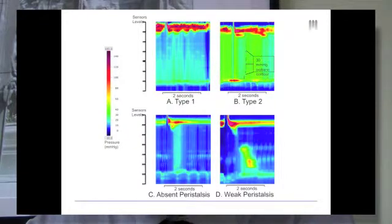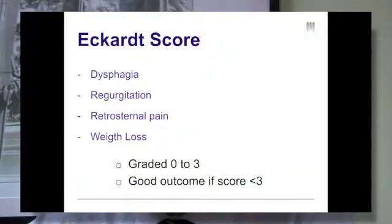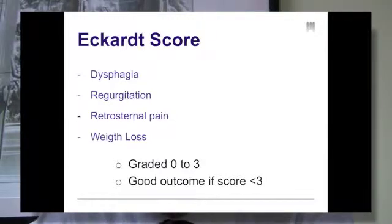Hence, patients were categorized as having a persistent Achalasia pattern if they met the criteria for type 1 or type 2 Achalasia, or as a resolved Achalasia pattern along with the description of the current manometric profile using the Chicago classification definitions. The symptom score used for the study was the Achalasia score, which is calculated by grading severity of dysphagia, regurgitation, retrosternal pain, and weight loss from 0 to 3. Patients were then classified as having a good outcome if the Achalasia score was lower than 3, or a poor outcome if the Achalasia score was greater than 3.